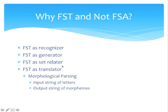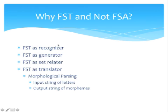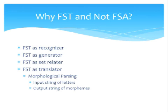So why do we use FSTs and not FSAs? Generally, we use FSAs to define a set of strings, but an FST determines the relationship between sets of strings, which is very important in natural language processing. FST as a recognizer takes a pair of strings as input and accepts it if the string pair is in the string-pair language, otherwise it rejects it. FST as a generator outputs pairs of strings of the language and outputs yes or no. FST as a set relator computes relations between sets, and FST as a translator reads a string in and outputs another string. Morphological parsing is an example of a translator, because it inputs a string of letters and outputs a string of morphemes.